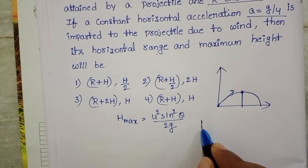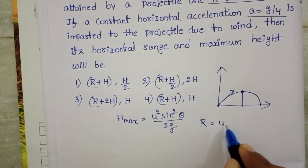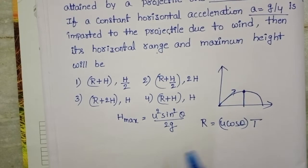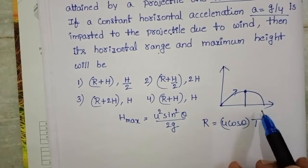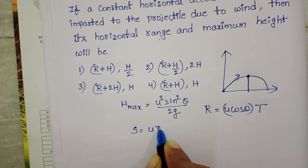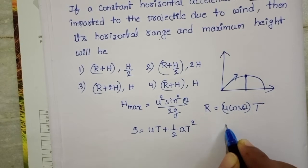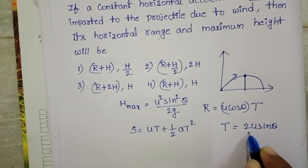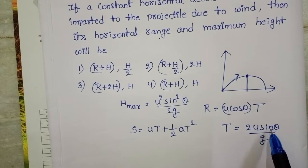The horizontal range formula when there is no acceleration along the horizontal direction is: u cosθ × time of flight. But now, in the second case, acceleration is acting along the horizontal direction, so we use the equation of motion: S = uT + ½aT², where T is the time of flight, which equals 2u sinθ / g. Note that the time of flight depends upon the vertical component of velocity.